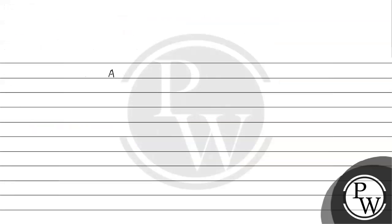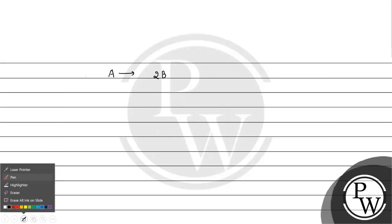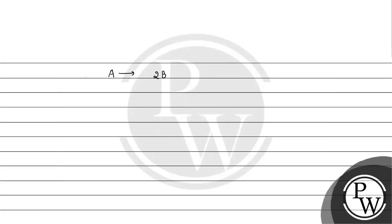Now, what is the reaction we have? A gives 2B. Initially, we have the concentration of A — or basically moles — how many moles of A? It is 1 mole. At that time we have no product.